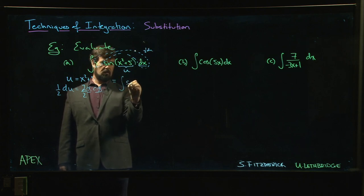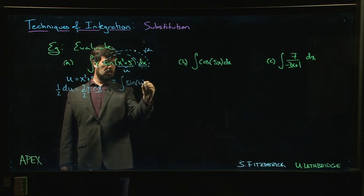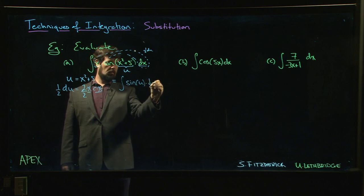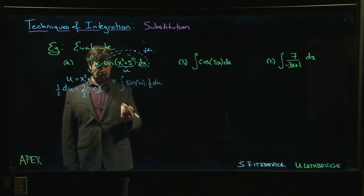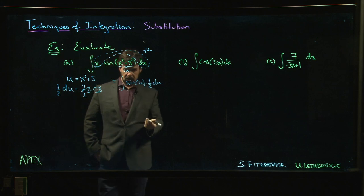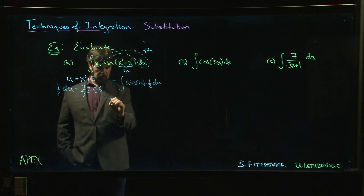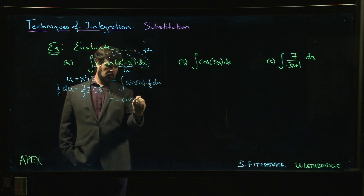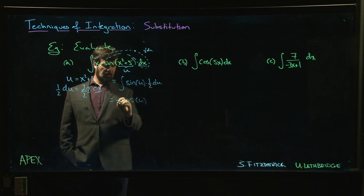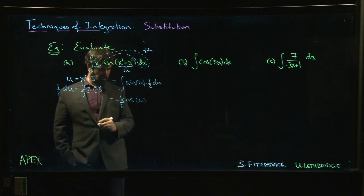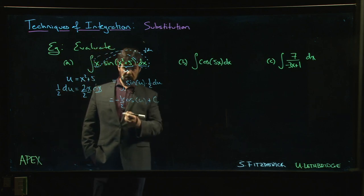So we have integral sine of u times one-half du, and we know what the antiderivative of sine is. This is now negative cosine of u times a half. Might as well put the one-half out front, possibly plus a constant.